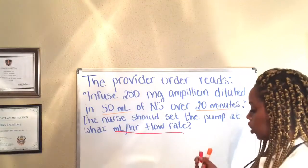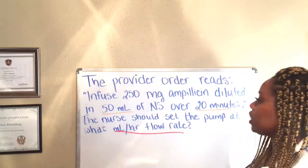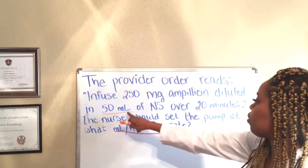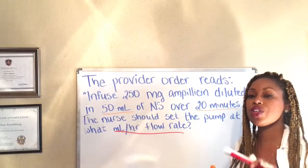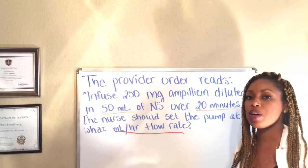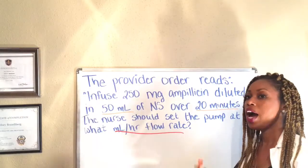Because we see that our question is asking us what we should set the flow rate at in milliliters per hour, the only thing we really need to focus on is milliliters per hour. So we come to our equation and we see that it's 50 milliliters over 20 minutes — that's all we really need to focus on. The 250 milligrams of ampicillin is just extra information, so don't let it throw you off.